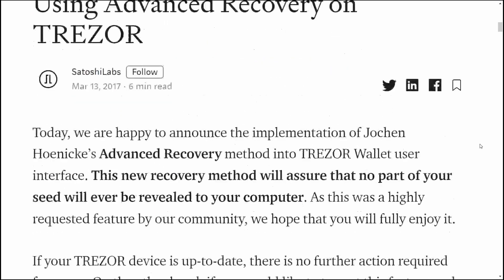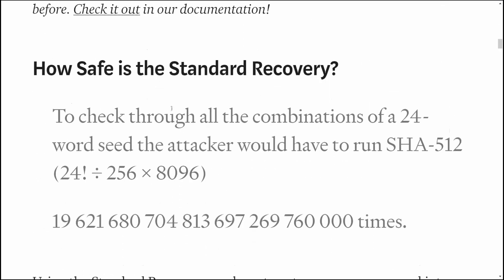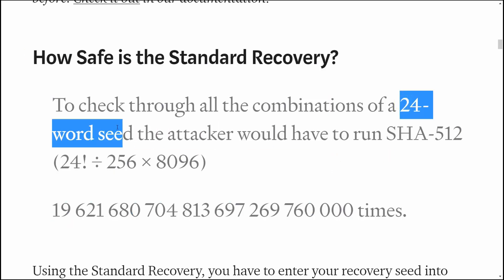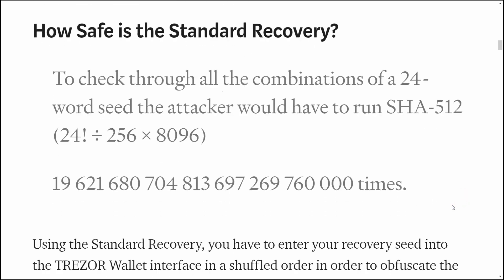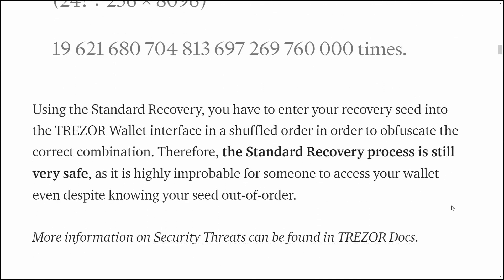The standard recovery process for Trezor is very fast and actually quite secure. The one thing you really need to be aware of is if you only have a 12-word seed, not a 24-word seed — every time you enter it in, it not only scrambles the words but injects some extra random words so it looks like you've got a full 24-word seed.